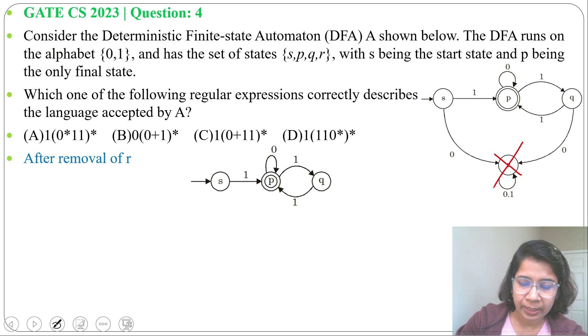Next we'll remove state Q. So after removal of state Q, there is a transition from P to Q by 1, then from Q to P by 1. So from P to P we are reaching by 1,1 through Q. So that we need to add. So when we are removing state Q, we should add this transition: 1,1 with P.